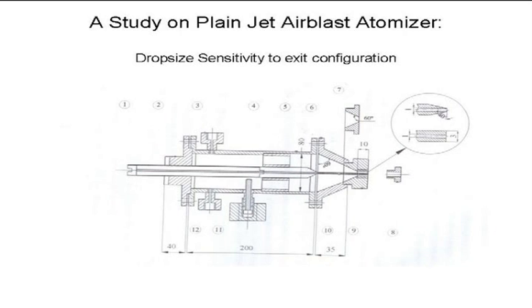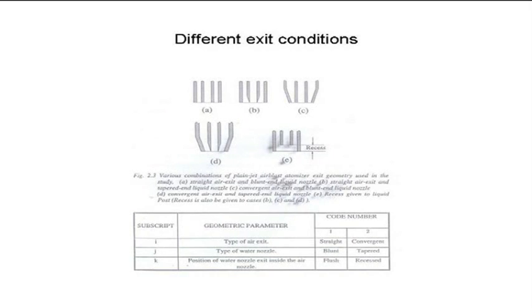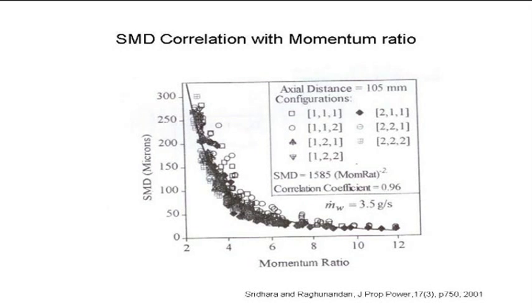We've obtained a large amount of data, though I don't think I have a complete explanation for all of it. You can say that if you look at the different ways you can make the flows impinge at the tip — straight, converging, or with a recessed part with converging flow — just making this little difference and measuring the drop sizes gives a large amount of data. You can plot it in terms of momentum ratio and get a reasonable plot, but whether we can really model this is still a question.